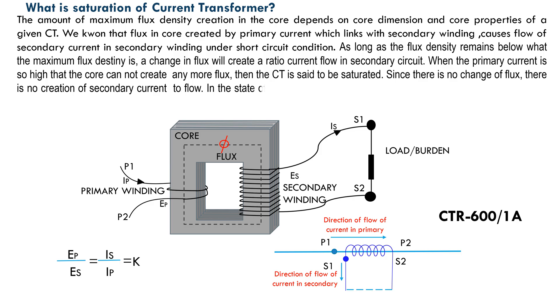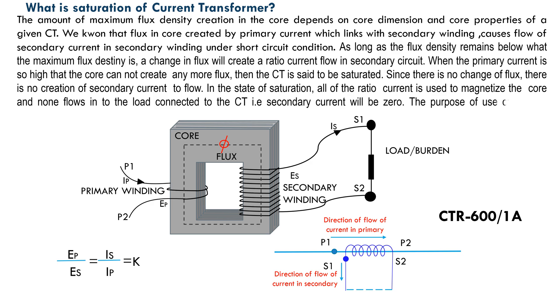In the state of saturation, all of the ratio current is used to magnetize the core and none flows into the load connected to the CT. That is secondary current will be zero. The purpose of use of current transformer at the saturation period is automatically become invalid.